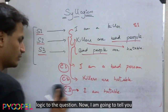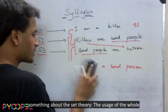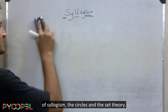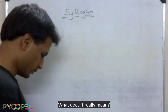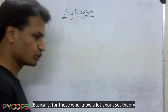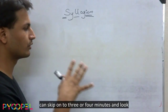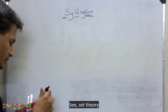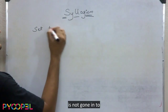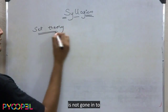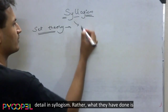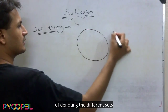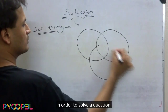Now I'm going to tell you about set theory — the usage of circles to understand and solve syllogism questions. Set theory is not gone into in great detail in syllogism. Rather, what is used is just the notation, the style of denoting different sets in order to solve a question.